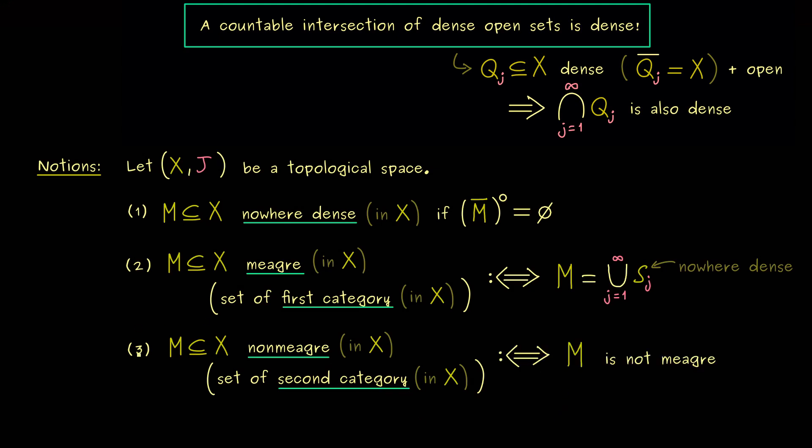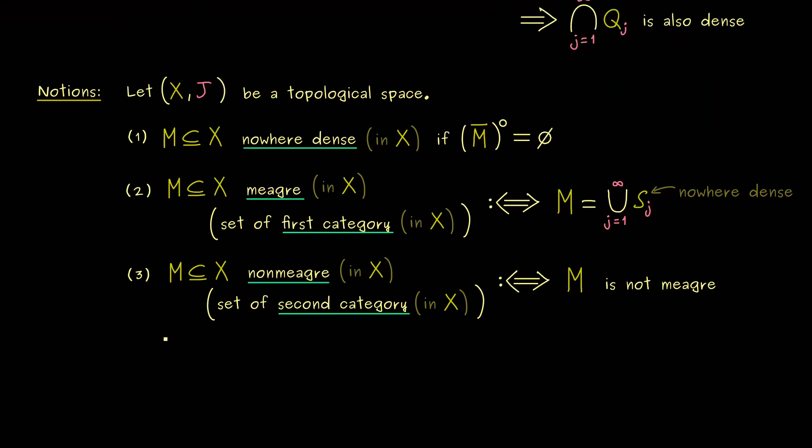Therefore then we would call the set M non-meager in X. Or using the other language we would say it's of second category. So you see, there are only two possibilities. Either the set is meager or it's not meager. And indeed by using these notions for subsets of X we can formulate our Baire category theorem.